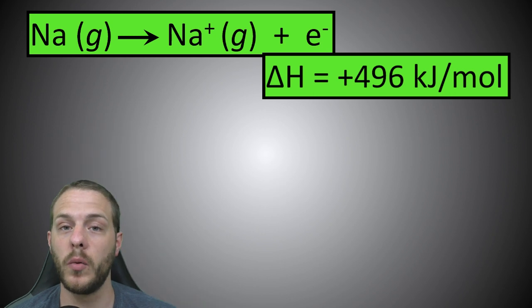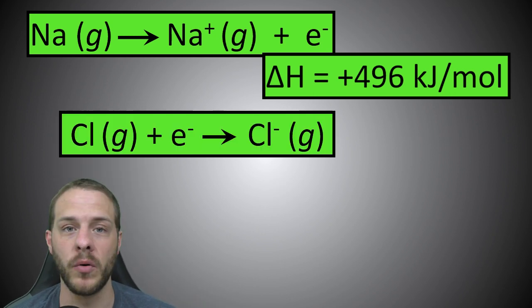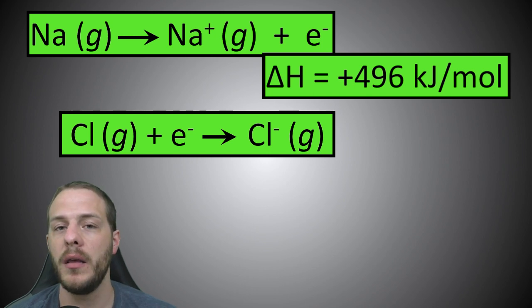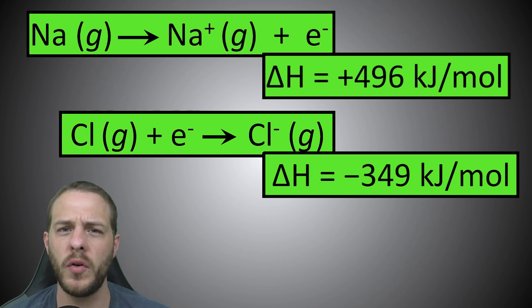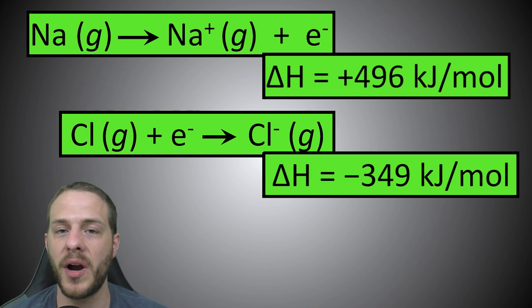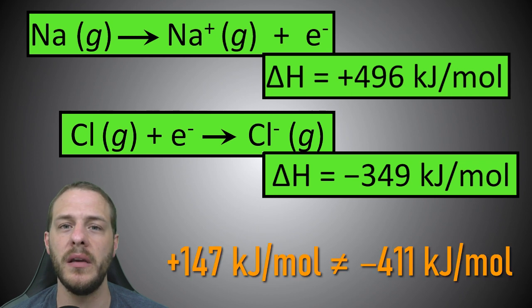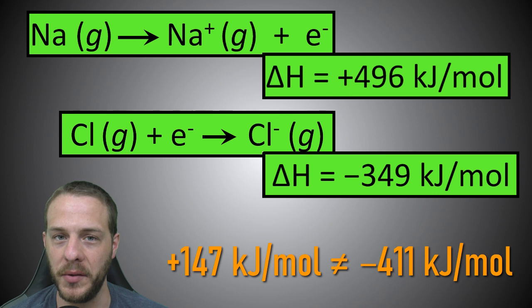Meanwhile, the addition of an electron to a chlorine atom is exothermic. However, chlorine's electron affinity, or the energy associated with the gain of an electron by a chlorine atom, is only 349 kilojoules per mole. If sodium's loss of an electron and chlorine's gain of an electron were the only thermodynamic processes responsible for the formation of sodium chloride, then we would predict sodium chloride's standard heat of formation to be positive 147 kilojoules per mole, not negative 411 kilojoules per mole.